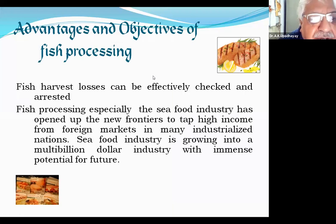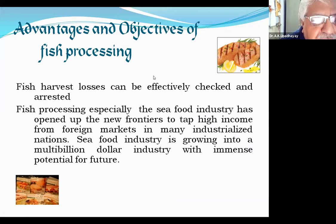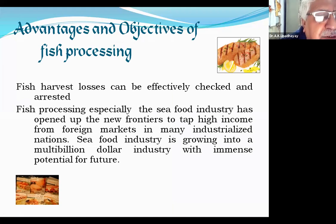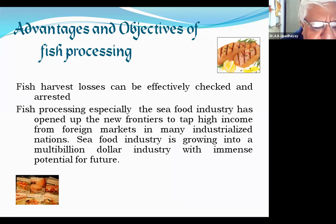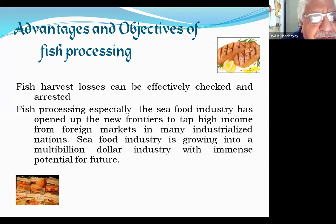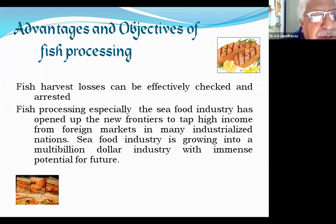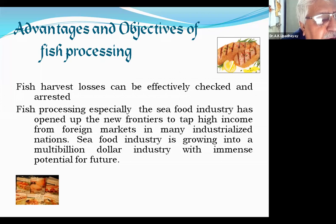These are the advantages and objectives of fish processing. By processing, we are able to effectively check the post-harvest losses. This is because we aim to increase the acceptability of the fish, and similarly, we have to ensure it reaches every part of our country. For that, we need to increase its shelf life. How that can be attained, we shall see later on.